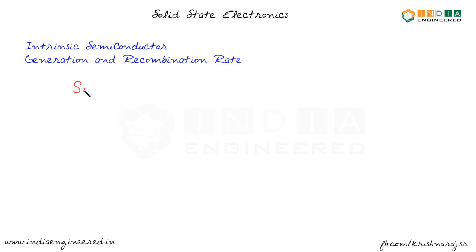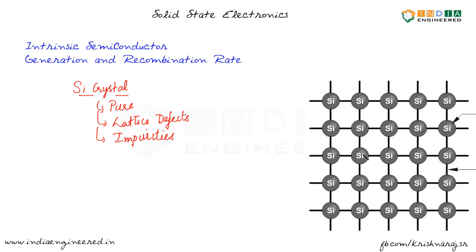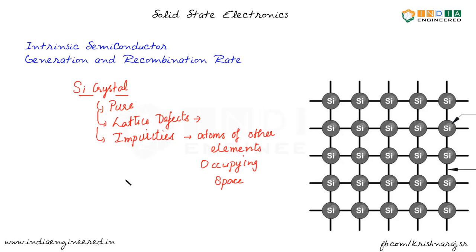So far in our discussions we were talking about silicon crystal — pure silicon crystal that is free of lattice defects or any kind of impurities. Each silicon atom is in covalent bond with four other silicon atoms. Lattice defects can be like point defect, line defect, volume defect, etc. Impurities are atoms of other elements occupying the place of silicon. Any semiconductor material which is pure — free of lattice defects or any impurities — we can call it an intrinsic semiconductor.